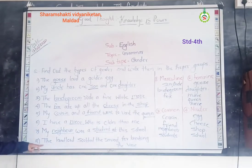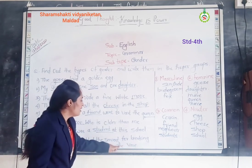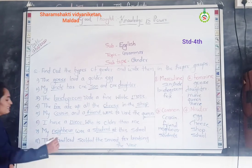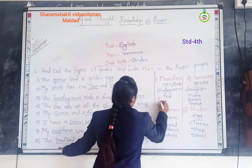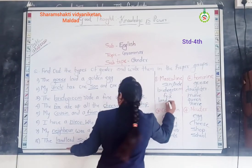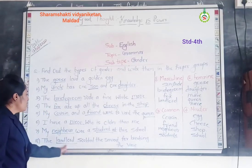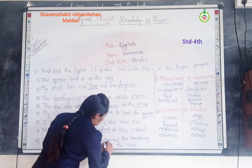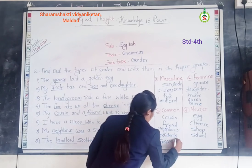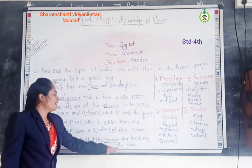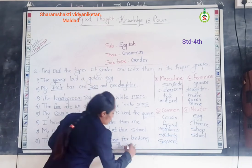Eighth sentence: The landlord scolded the servant for the lady, the place. In this sentence, landlord is a masculine gender. The servant is a common gender. And 'S' (the place) is a neuter gender.